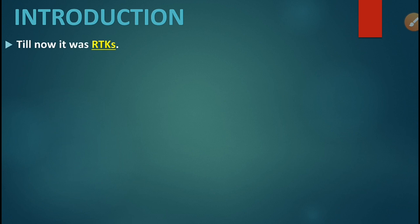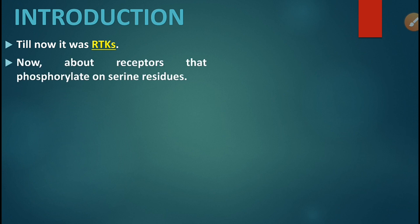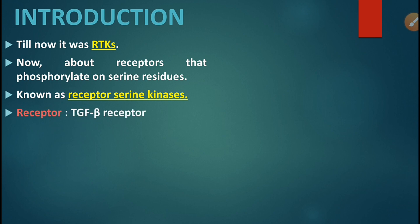Until now, our discussion was about receptor tyrosine kinases, which phosphorylate target proteins on tyrosine residues. In this video, we will talk about receptor kinases that phosphorylate on the serine residues of target proteins, and hence they are called receptor serine kinases. The receptors in these pathways are called TGF-beta receptors, or transforming growth factor beta receptors, and the signaling molecule is TGF-beta, or transforming growth factor beta.